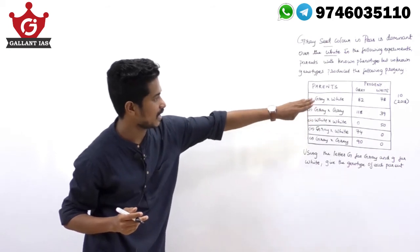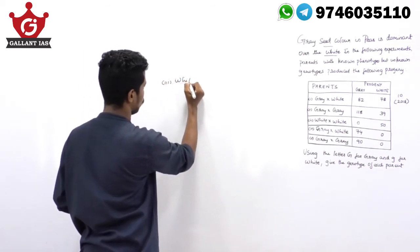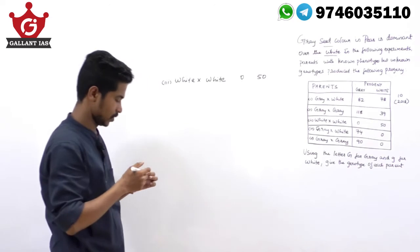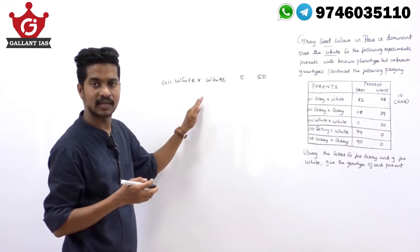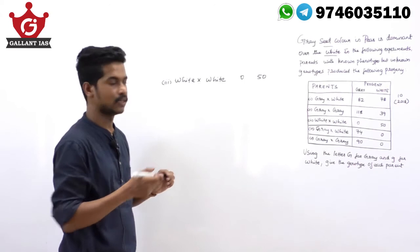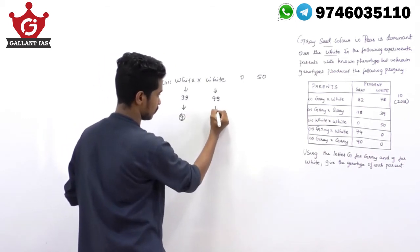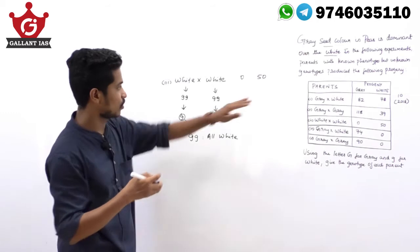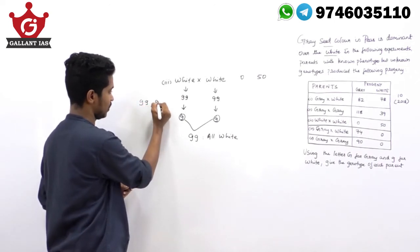The third cross: white is crossed with white, and the progenies obtained are 0 gray and 50 white. The only possibility of white is small g small g. If capital G were present, it would be expressed. In the absence of the dominant character, the recessive character will be expressed. So both parents are small g small g × small g small g, producing all small g small g offspring — 0 gray and all white, which matches the result.